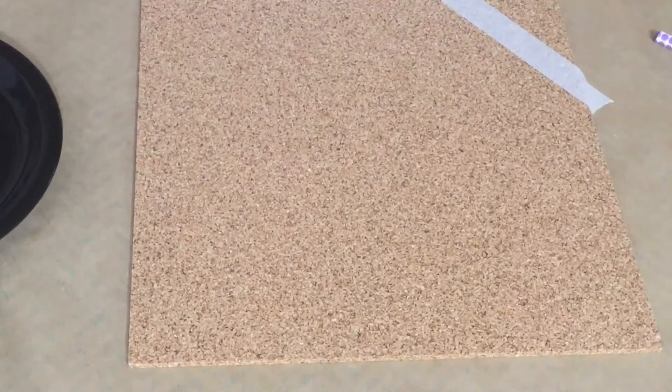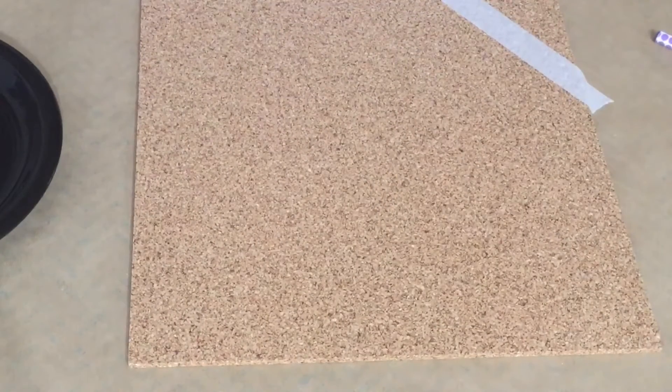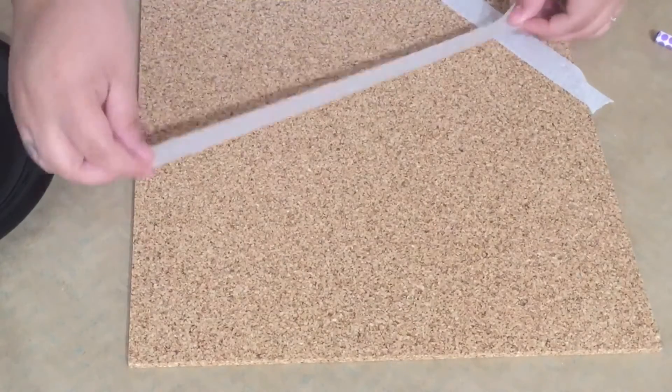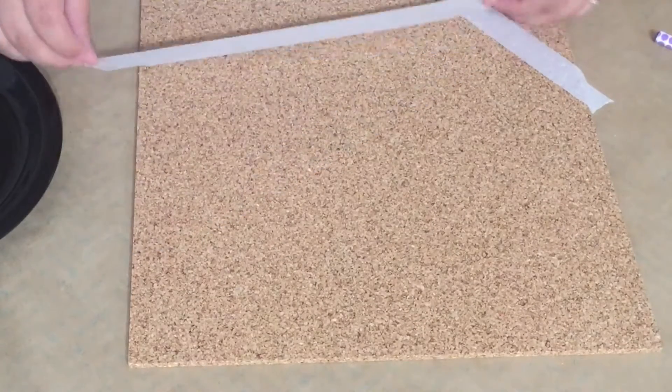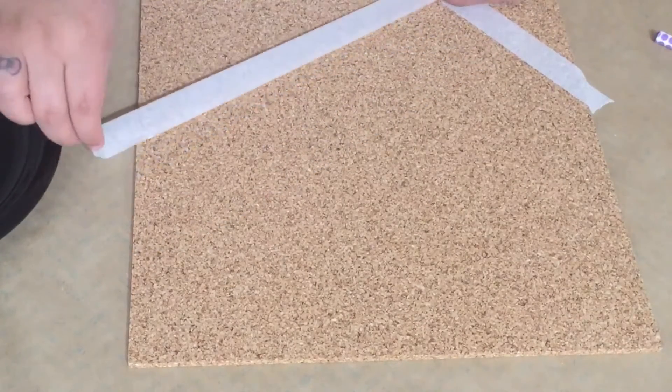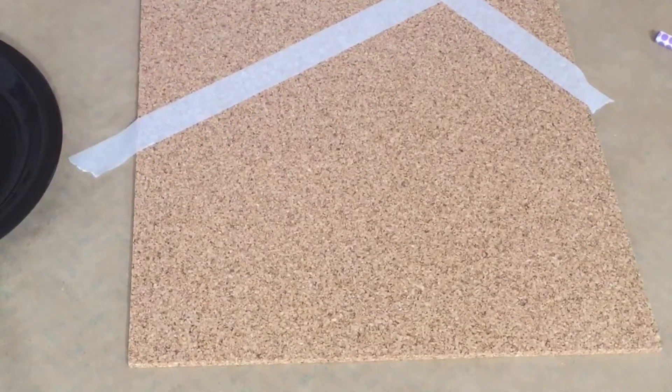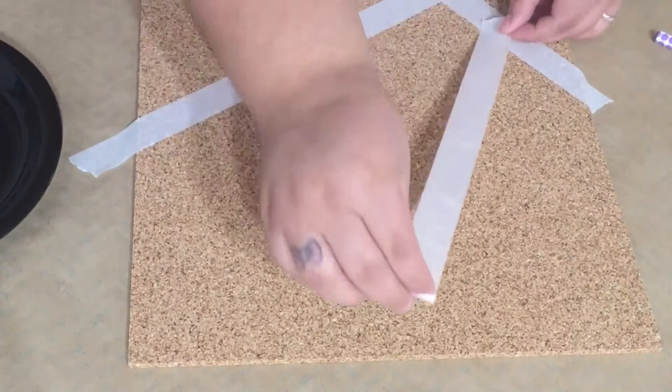Step is to create shapes with the tape to make geometric designs. Make sure to firmly press down on the tape to have nice crisp lines. If not, the paint may creep under it and you might have to do a little bit of a touch-up.